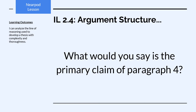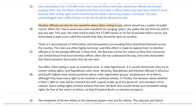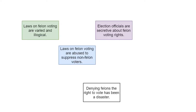Paragraph 4 meets our expectations — we have the claim right there in the very first clause: 'Election officials are also far too secretive about felon voting issues.' Notice the word 'also' — that implies this idea is a continuation of the idea in the previous paragraph. And it makes sense because the same two examples are used — Katherine Harris in 2000 and the 47,000-name purge list in 2004 — but to support a different claim: not only are they abusing these laws to suppress votes, they're being secretive about it.